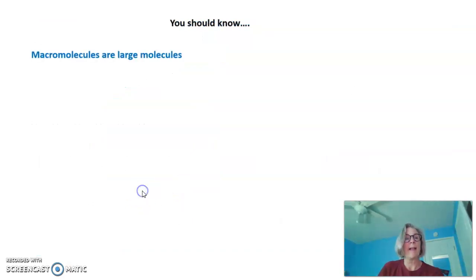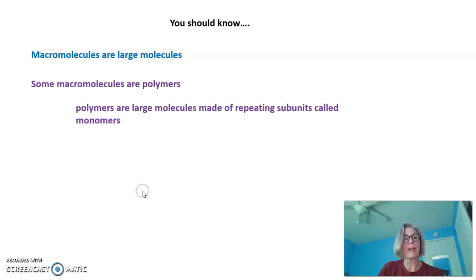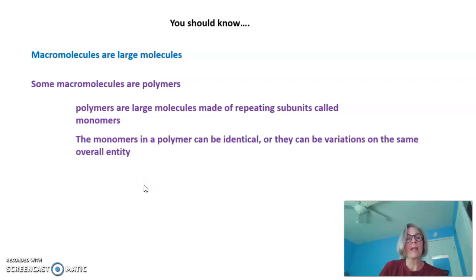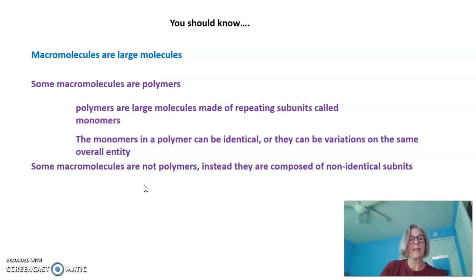You should know that macromolecules are large molecules. Some macromolecules are polymers. Polymers are large molecules made of repeating subunits called monomers. The monomers in a polymer can be identical or they can be variations on the same overall entity. Some macromolecules are not polymers at all. Instead they're composed of non-identical subunits.